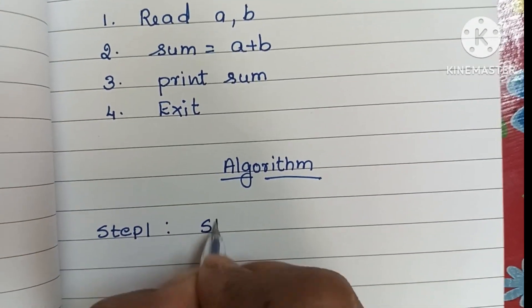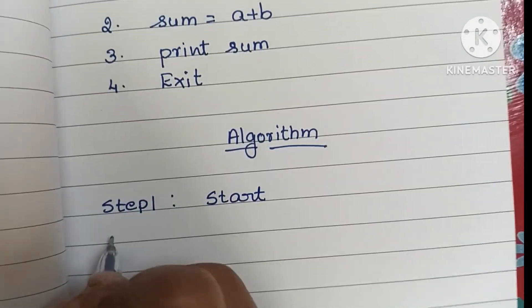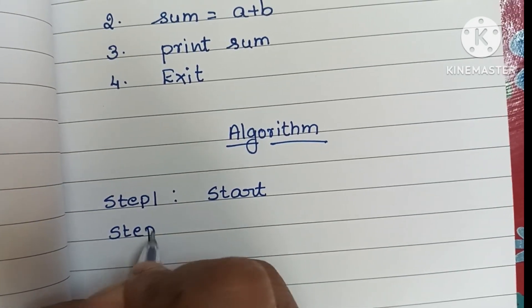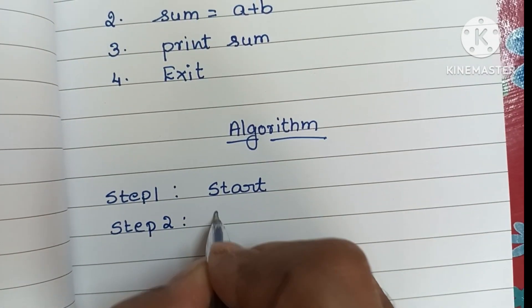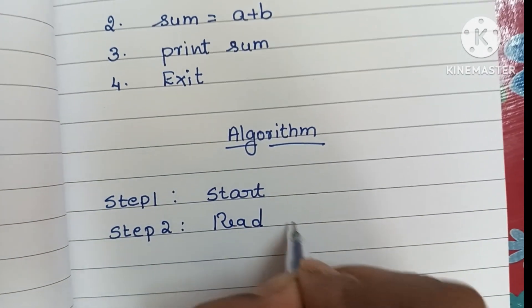Step two: we have to read input values, that is read a and b.